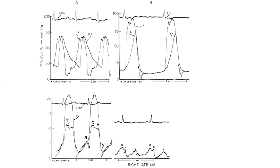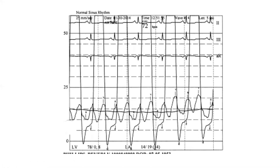Ventricularized RA pressure is pathognomonic for severe TR. You can identify it on physical exam as ventricularized jugular venous pressure — the JVP pulsates like the carotid pulse with a single waveform. On the left side, even in severe MR, you don't get ventricularized LA waveform because the early systolic pressure difference between LV and LA is very high, preventing that rectangular shape.